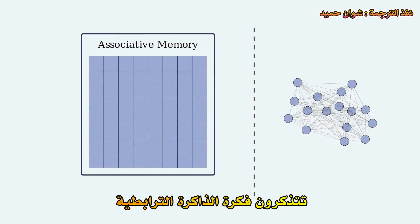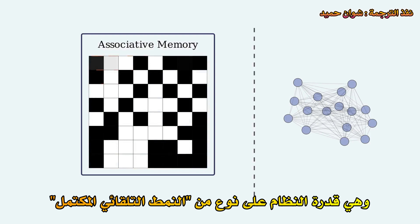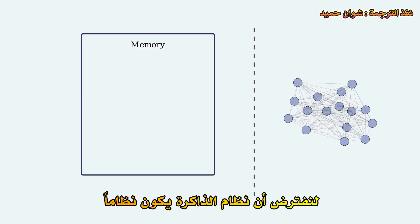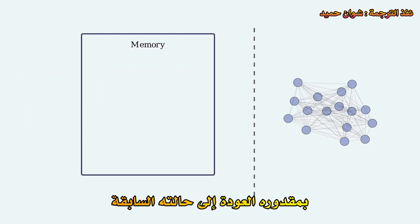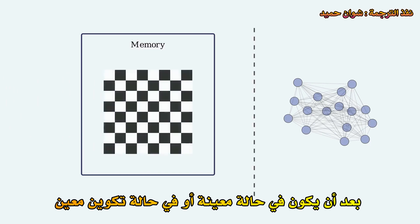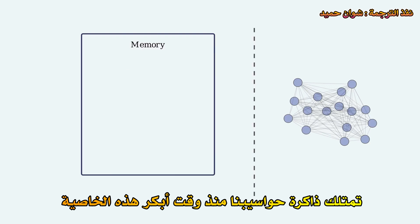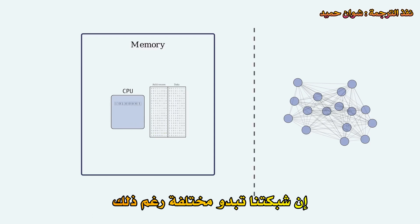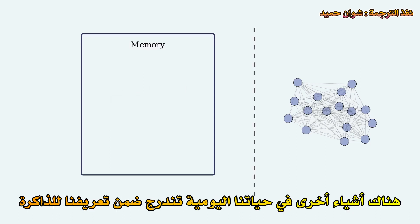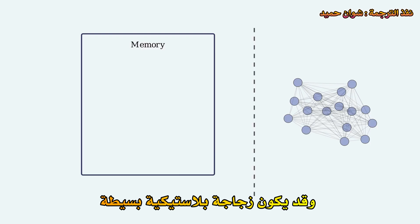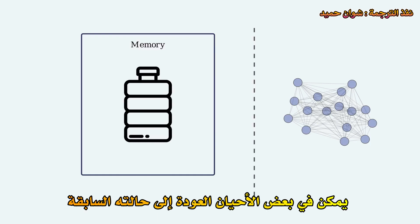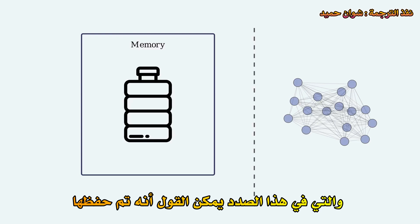Remember the idea of an associative memory — the ability of a system to sort of pattern-autocomplete. Let's try a definition of memory that's slightly wider than maybe what we're used to. Let a memory system be a system that, after having been in a certain state or configuration, has the ability to return to that state later on. Now our computer memory from earlier actually has this property, if we include the CPU into the memory system. Our network seems different though. There are other things in our everyday lives that fall under this definition of memory. One might be — hear me out — a simple plastic bottle. If it's crushed, in other words its configuration changed, it can sometimes return to its earlier state, which in that sense could be said to have been memorized.